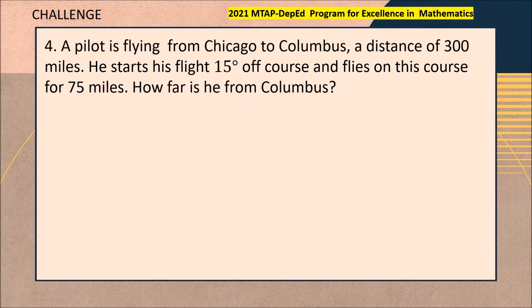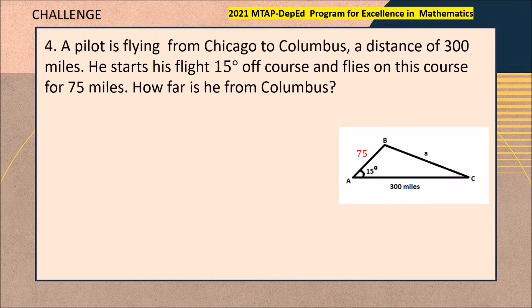Hello everyone. This challenge was taken from the 2021 MTAP DepEd Program of Excellence in Mathematics. A pilot is flying from Chicago to Columbus where the distance is 300 miles. He starts his flight 15 degrees off course and flies in this course 75 miles. How far is he from Columbus?